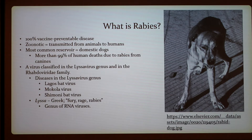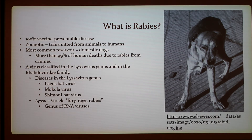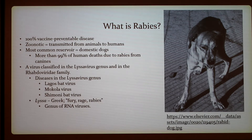Rabies is a virus classified in the Lyssavirus genus and the Rhabdoviridae family. There are related diseases in the same genus, like the Lagoce bat virus and Mokola virus, which have similar symptoms to rabies and many are associated with bats. 'Lyssa' is Greek, meaning fury or rage, and rabies is a genus of RNA viruses.